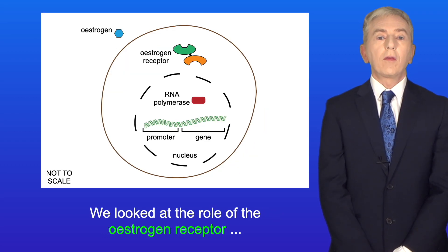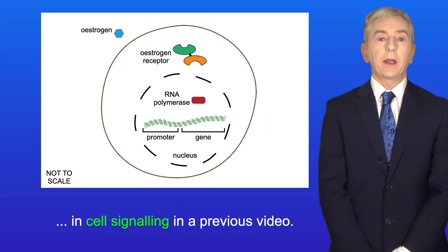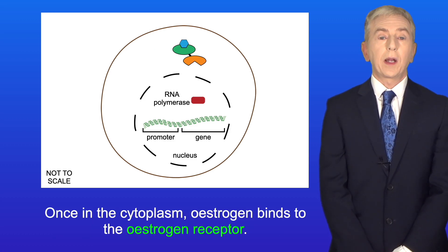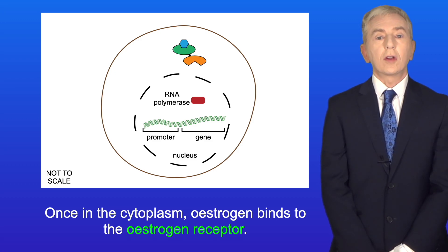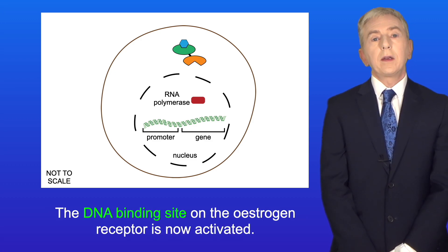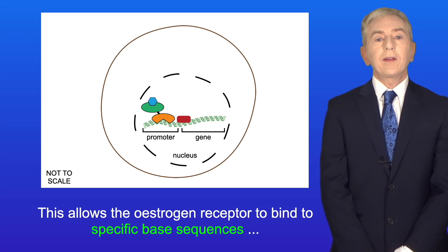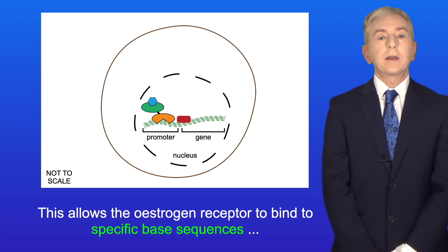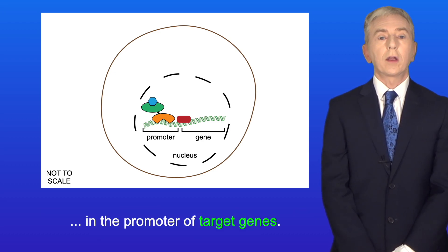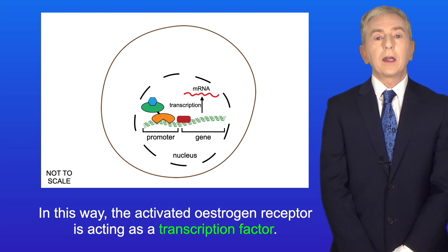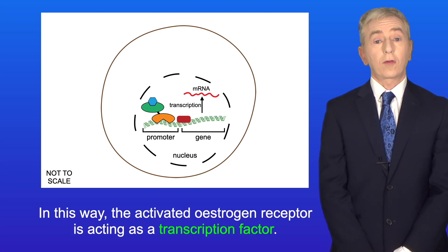We looked at the role of the oestrogen receptor in cell signaling in a previous video. Oestrogen passes through the phospholipid part of the cell membrane and, once in the cytoplasm, binds to the oestrogen receptor. The DNA binding site on the oestrogen receptor is then activated, allowing it to bind to specific base sequences in the promoter of target genes and trigger their transcription. In this way, the activated oestrogen receptor acts as a transcription factor.